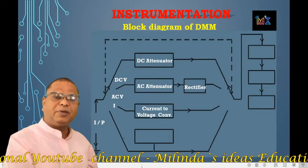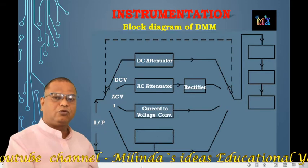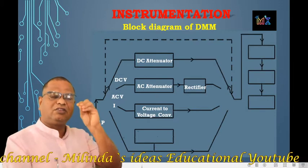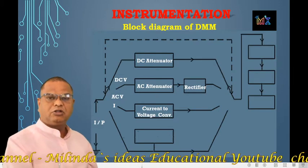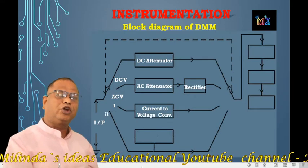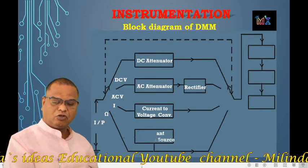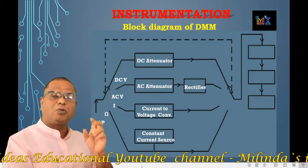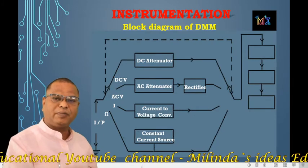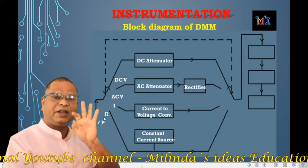For the current measurement, the block used is known as the current-to-voltage converter. The next input parameter to be measured by this meter is resistance. For the measurement of resistance, the block used is known as the constant current source. So these are the blocks used for the measurement of DC voltage, AC voltage, current, and resistance.